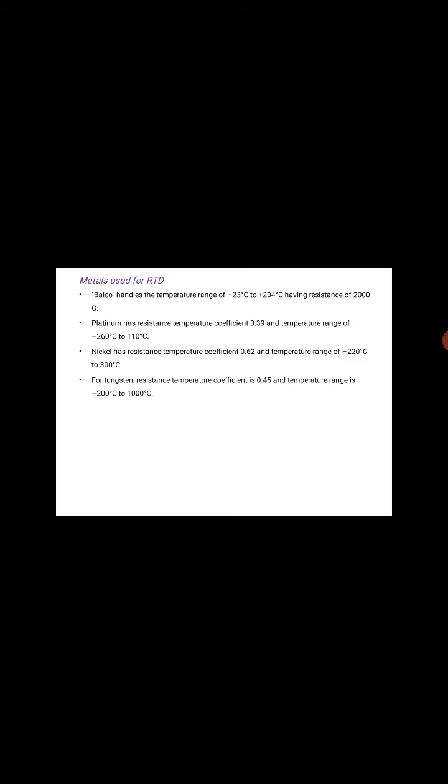Materials used for RTD: Balco handles the temperature range of minus 23°C to 204°C, having a resistance of 2000 Ω. Platinum has a resistance temperature coefficient of 0.39 and a temperature range of minus 260°C to 1100°C. Nickel has a resistance temperature coefficient of 0.42 and a temperature range of minus 220°C to 300°C. For tungsten, the resistance temperature coefficient is 0.45 and the temperature range is minus 200°C to 1000°C.